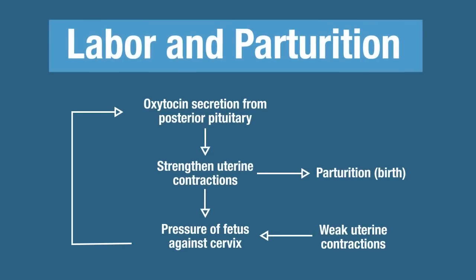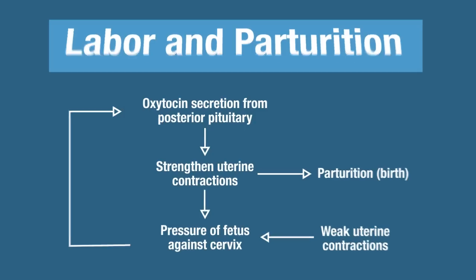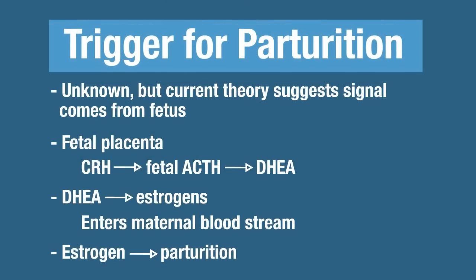We've talked about oxytocin before — how it's synthesized and secreted by the hypothalamus, and then stored in the posterior pituitary. The pressure of the fetus up against the cervix causes a positive feedback loop that causes the release of oxytocin from the posterior pituitary, and that strengthens uterine contractions so that birth can take place. That should be a review for you.